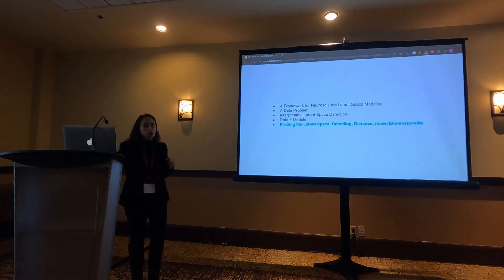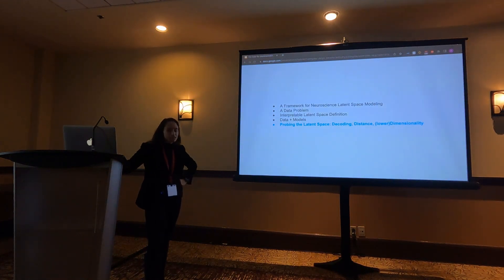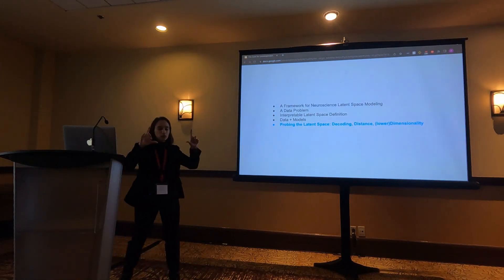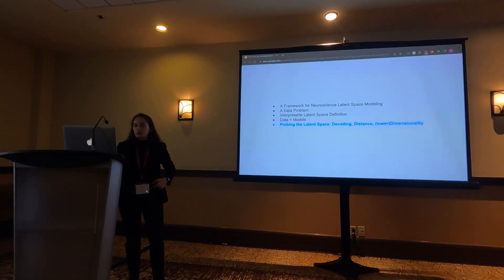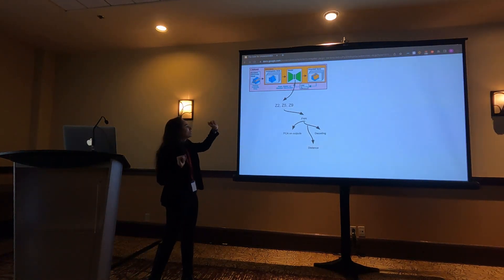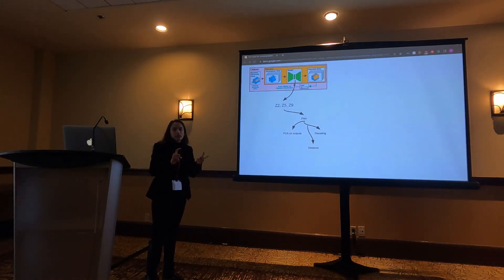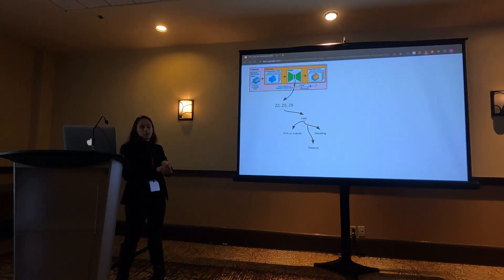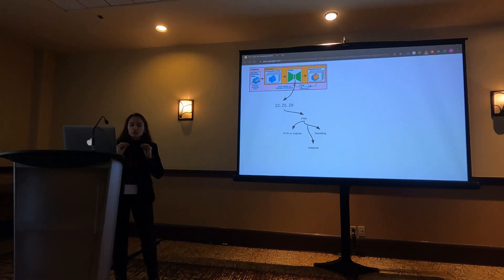Now we'll probe this latent space quickly — all new, unpublished work. We're examining three types of actionability: decoding, distance, and lower dimensionality. I've trained the network, it creates latents Z. I'm looking at three patients — two, five, and nine — take their latents, pass them into a feedforward neural network, and then explore PCA on the outputs, distance, and decoding. I want to get a sense of different ways we can measure this latent space and see if it's actionable.